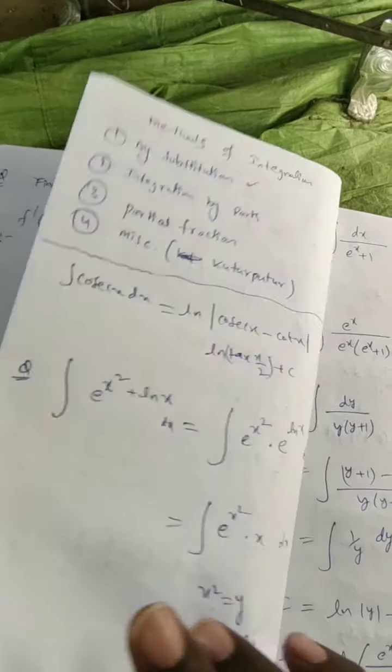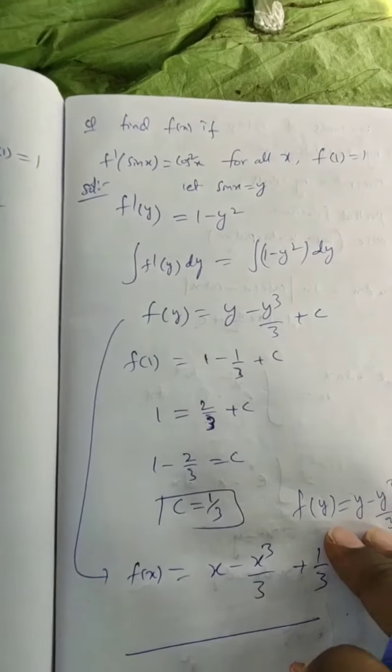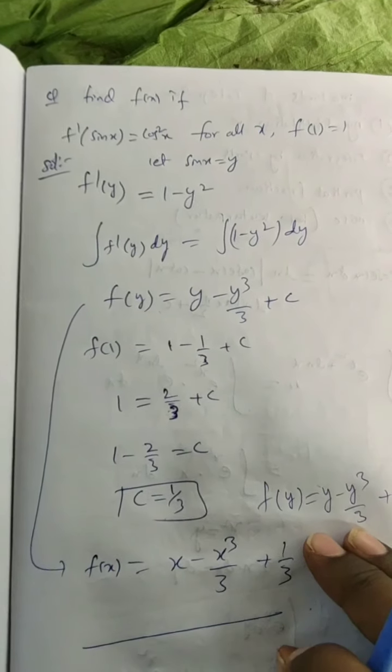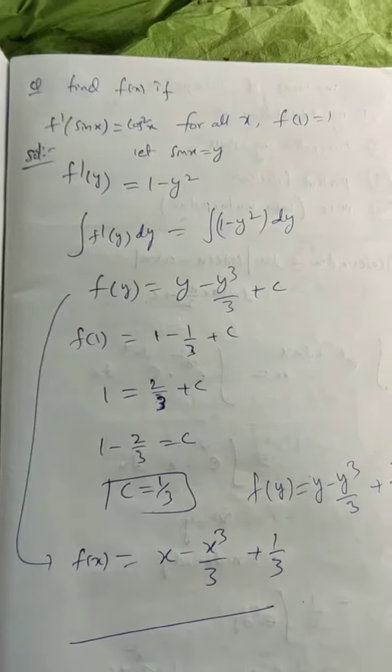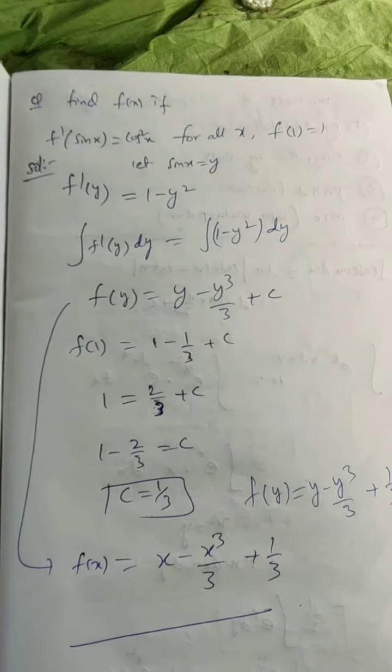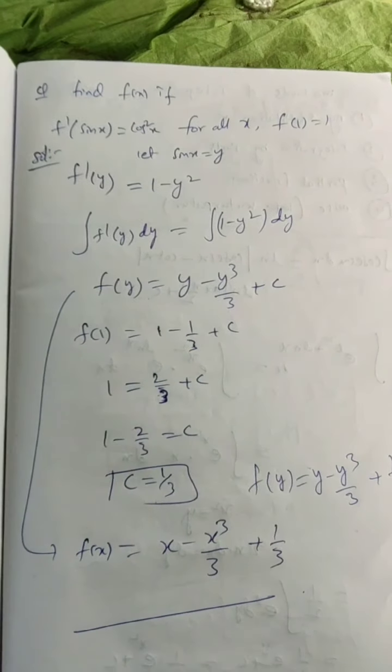Therefore f(x) = x − x³/3 + 1/3. This is the method for all such questions. I hope you understood. Thank you so much — we'll start another class next.